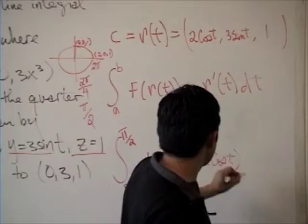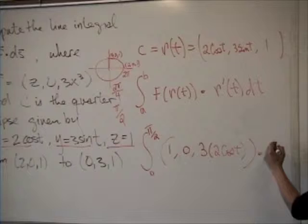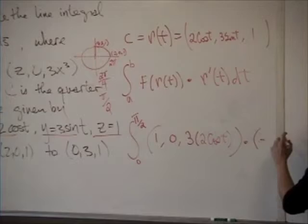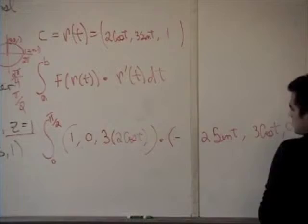And this is your vector field, and you're dotting it by the derivative of your C, which is r of t. So you take a derivative of that, which will give you negative two sine of t, three cosine of t, and zero.